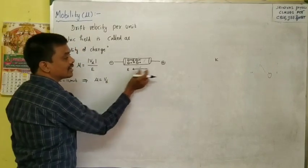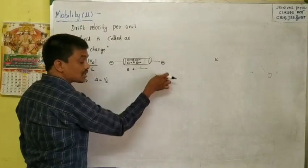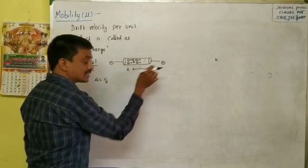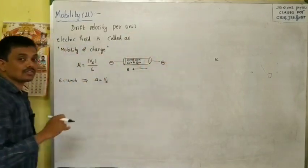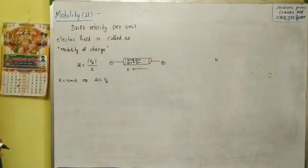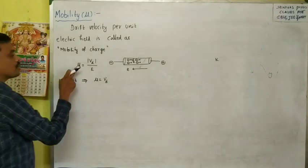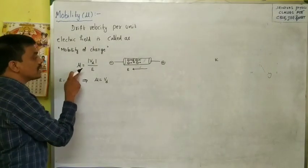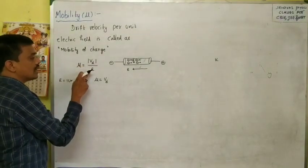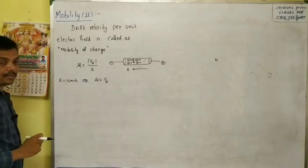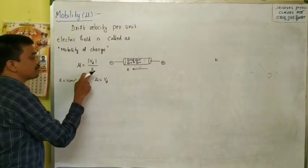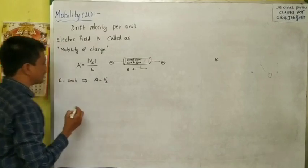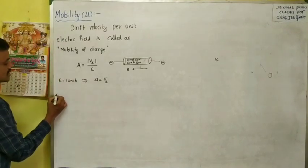This drift velocity per unit electric field: if the electric field is strong, the positive charge is more on one side and negative charge is more on the other, so the attraction is more. More charge carriers will move with high speed, and the mobility will be more. So mobility depends upon the electric field.